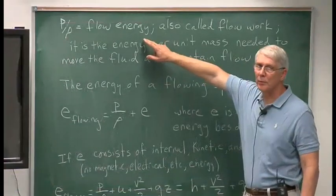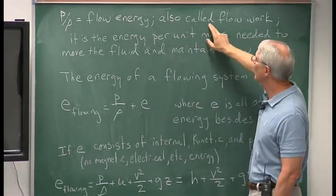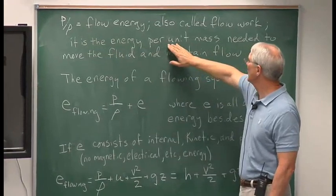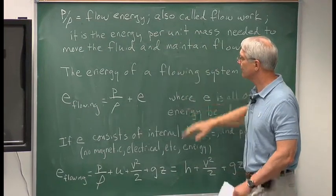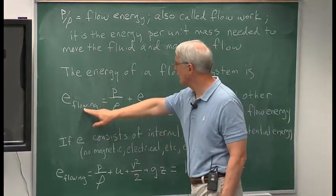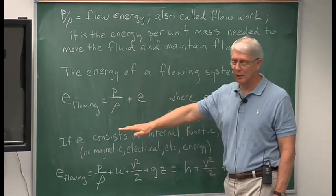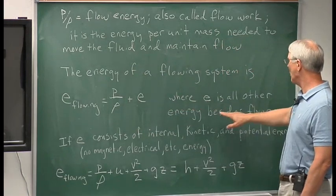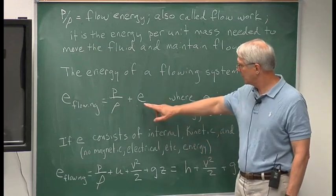The other term, P over rho — pressure over density — is called the flow energy, also sometimes called the flow work. It doesn't look like an energy if you look at it; it doesn't have the units of energy. But it's the energy per unit mass needed to move the fluid and maintain the flow. Now if we talk about the total energy of a flowing system, we'll call that E sub flowing, and that consists of the flow energy plus this other term E, where E is all other energy besides flow energy.